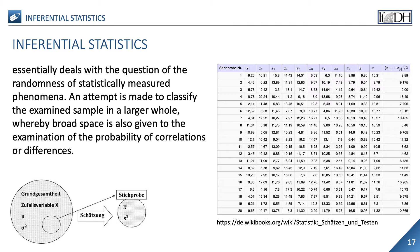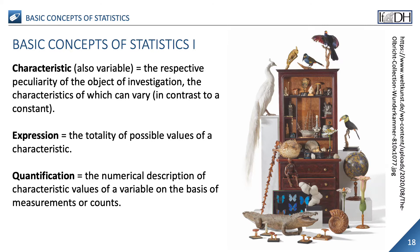Some important basic terms: a characteristic, also called a variable, is the respective peculiarity of the object of investigation, the characteristics of which can vary in contrast to a constant. In the case of collection objects, for example, a characteristic could be the affiliation to a certain genre or epoch, the weight, the inventory number or the market value. A characteristic is understood to be the totality of possible values of a variable — for example, the variable genus can take the form of animal specimen, plant specimen, mineral and model, and the variable sex can take the forms male, female and bisexual. The numerical description of the characteristics of a variable on the basis of measurements or counts is called quantification.